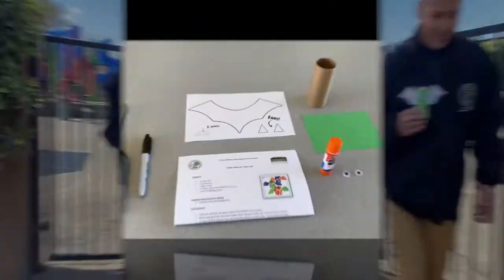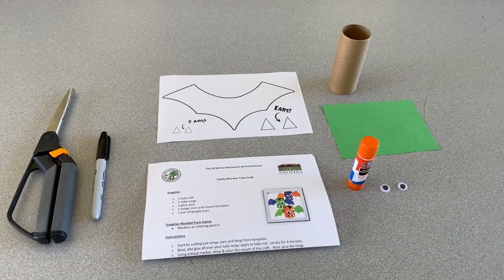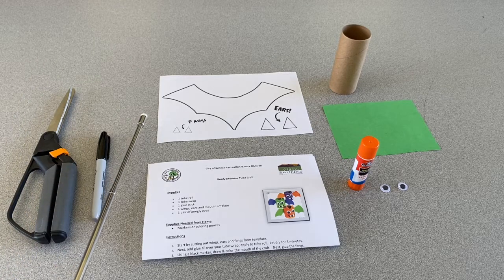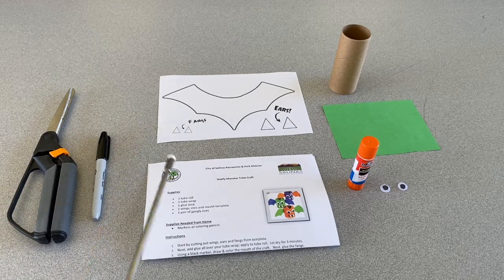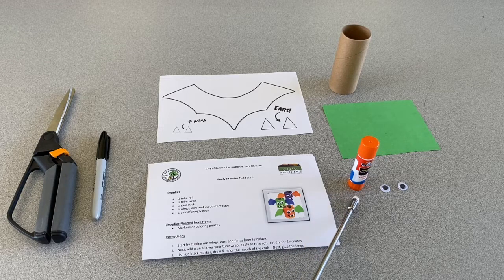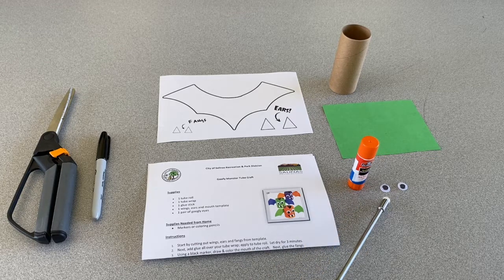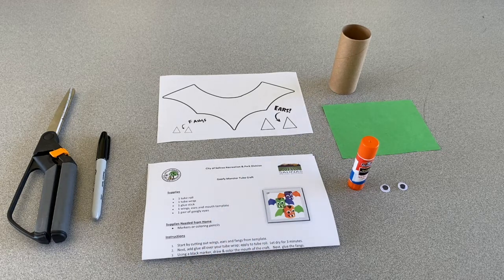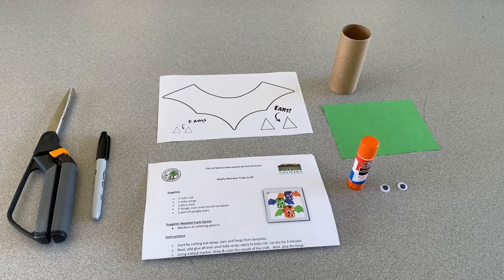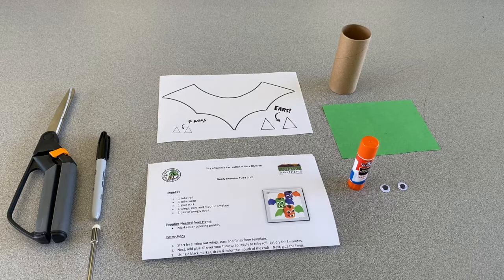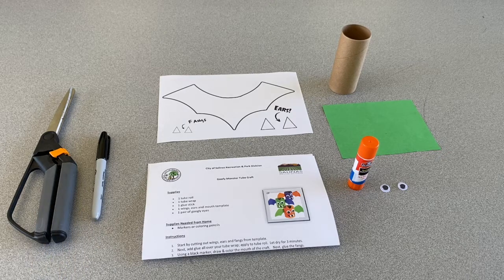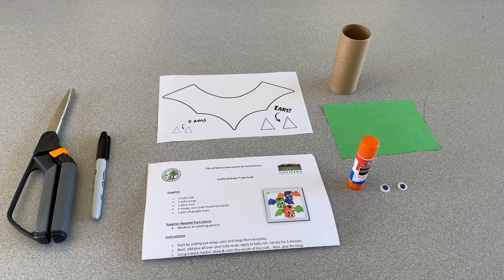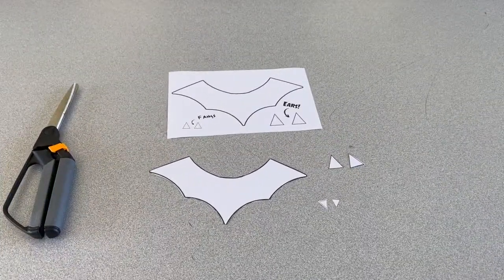Okie dokie folks, in your kit you should have the following supplies: your fangs, ears, and wings template, your instructions, a glue stick, a pair of googly eyes, your tube wrap, and your tube roll. What you're going to need from home are a sharpie marker and some scissors. Remember to please ask for permission from your parents before you do any cutting.